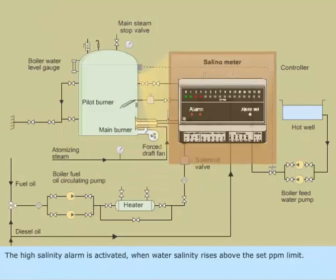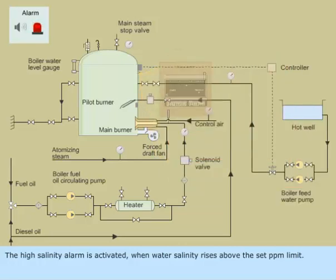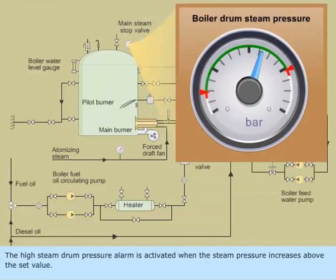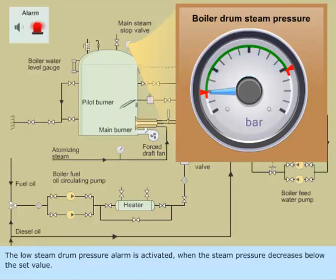The High Salinity Alarm is activated when water salinity rises above the set PPM limit. The High Steam Drum Pressure Alarm is activated when the steam pressure increases above the set value. The Low Steam Drum Pressure Alarm is activated when the steam pressure decreases below the set value.